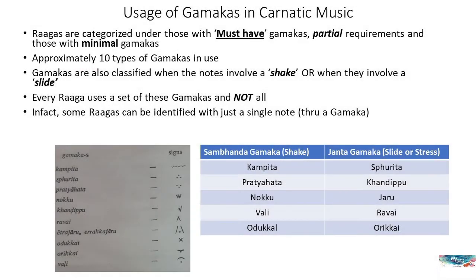Let us look at how Gamakas exist in the Carnatic world. Though there are multiple categorizations of Gamakas, what is used today is a classification of 10 types. These are classified based on whether the ornamentation is based on a stress or a slide. Every raga uses a set of these Gamakas and not all the Gamakas. In fact, some ragas can be identified with just one note with its corresponding shake or slide — we don't require the full scale to be played to identify the raga. Each instrument has developed a specific technique to play these Gamakas; for example, violin has a different technique compared to the veena or flute.